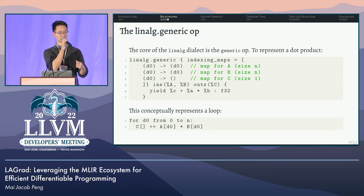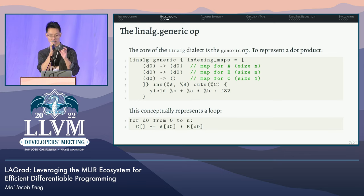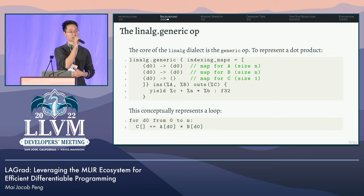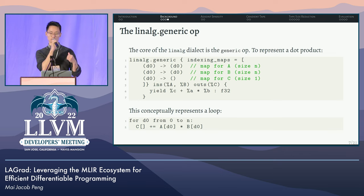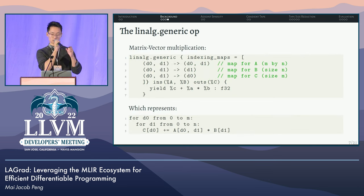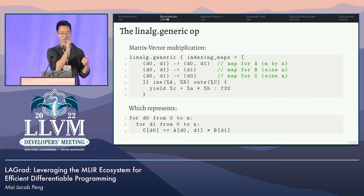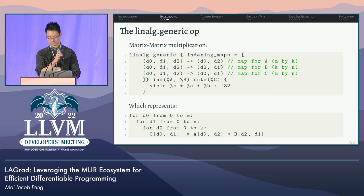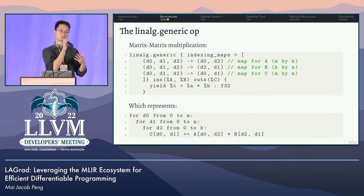I want to briefly go over some preliminaries with the linalg dialect in MLIR. This is a representation of a dot product, with pseudocode representing the same code below. The key thing is the indexing maps — we have one map for every input and output of our op. The inputs of every map describe how many conceptual parallel loops are in the linalg op, while the outputs dictate how we use those loops to index into our tensors. If we tweak the indexing maps for both inputs and outputs, we get a matrix-vector multiplication, representing two nested loops. One more tweak and we have a matrix-matrix multiplication — the outputs of each map dictate how we index into our tensors.